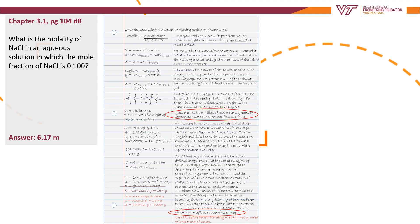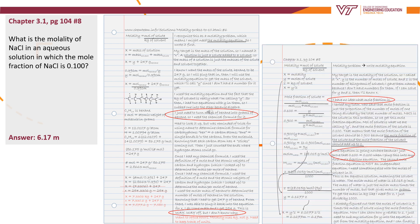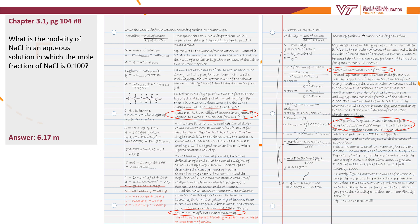This time we have a problem from the textbook. What is the molality of NaCl in an aqueous solution in which the mole fraction of NaCl is 0.100? The answer is 6.17 molality. So we apply the same process of metacognitive problem solving. I've jumped ahead a little and worked this one out so that you can see the full solution. Feel free to pause and look over the problem and my metacognitive notes.